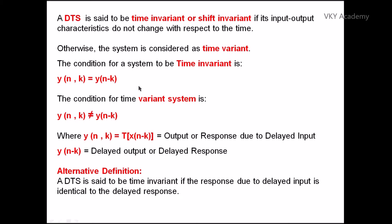There is a condition which has to be satisfied to test the time invariance of a system. The condition for a system to be time invariant is: y(n, k) is equal to y(n − k). Now let us understand what exactly y(n, k) is and what is y(n − k). Looking at y(n − k), y is the notation for the output, n is the time, and k is the shift variable. So y(n − k) represents delaying the signal by k units — this is the delayed output or delayed response.